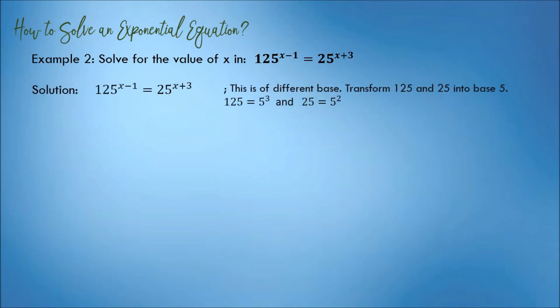The equation is of different base. Transform 125 and 25 into base 5. 125 is equivalent to 5 cubed while 25 is equivalent to 5 squared.